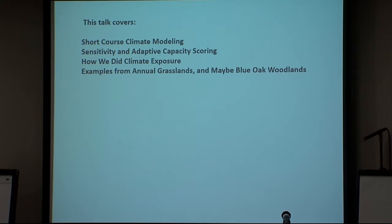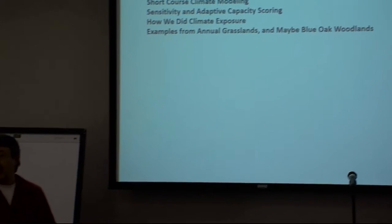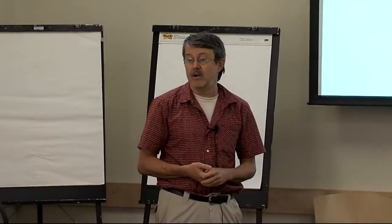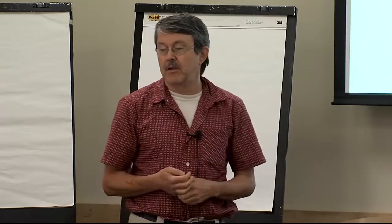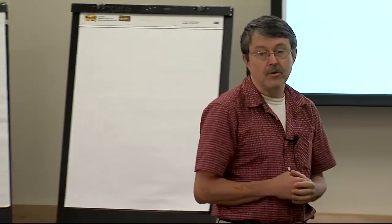I'll plow through first a very short review of climate modeling and what some of the projections for California are, and then look at the sensitivity and adaptive capacity scoring, which is a way that we can start to formalize our ideas about what we think different species within rangelands — how the different forage plants might be performing under changing conditions. Then I'll explain a bit about the climate exposure analysis we've done statewide for California and give you a couple examples.